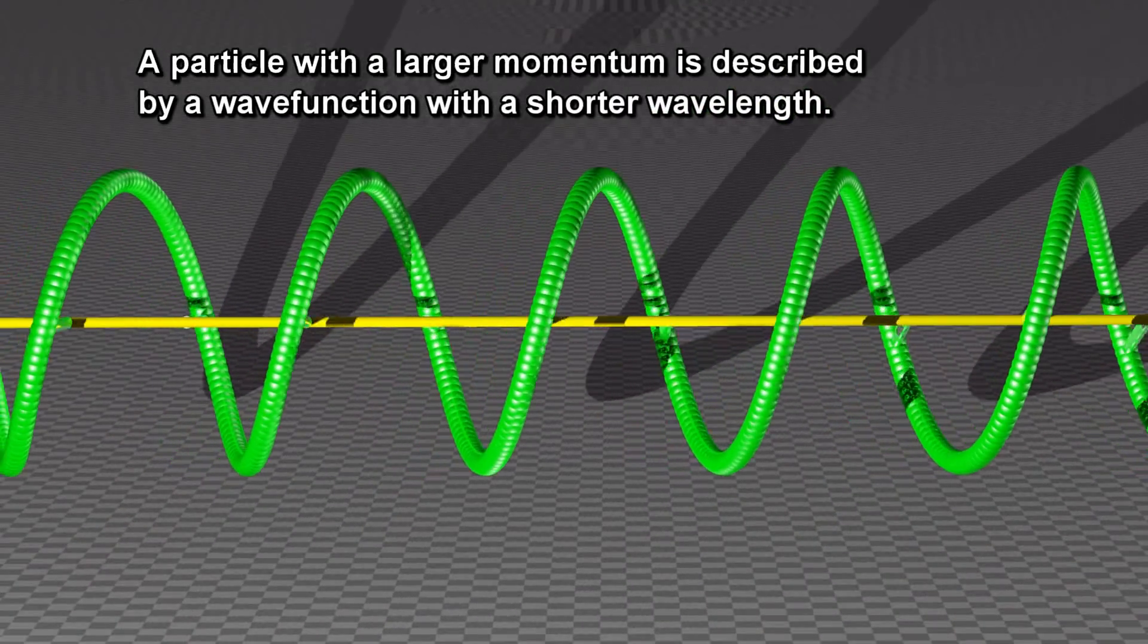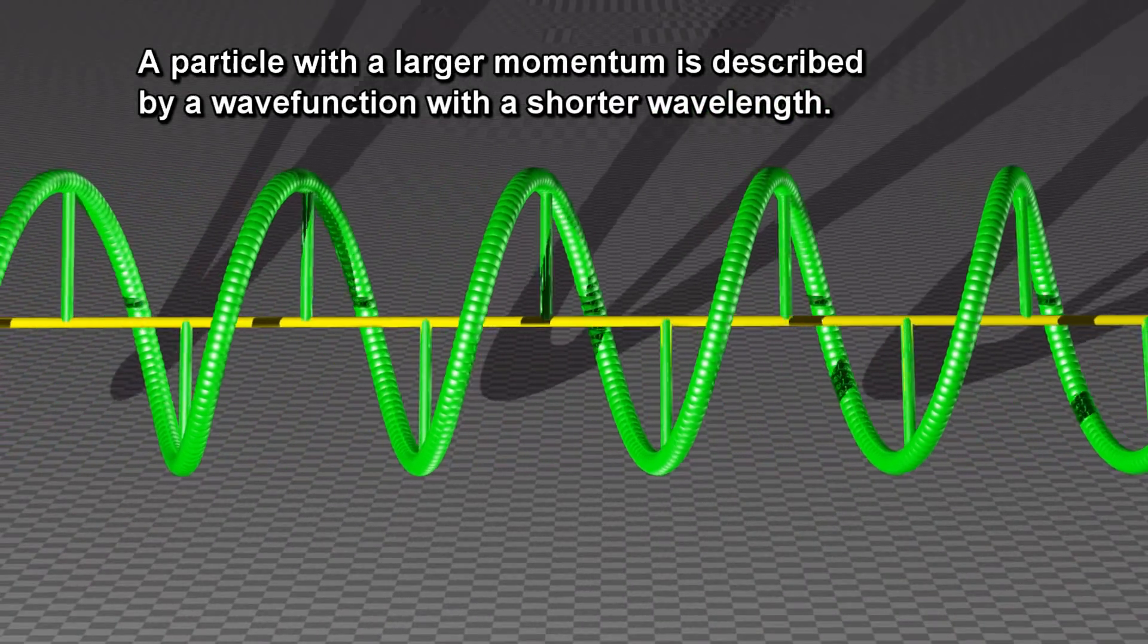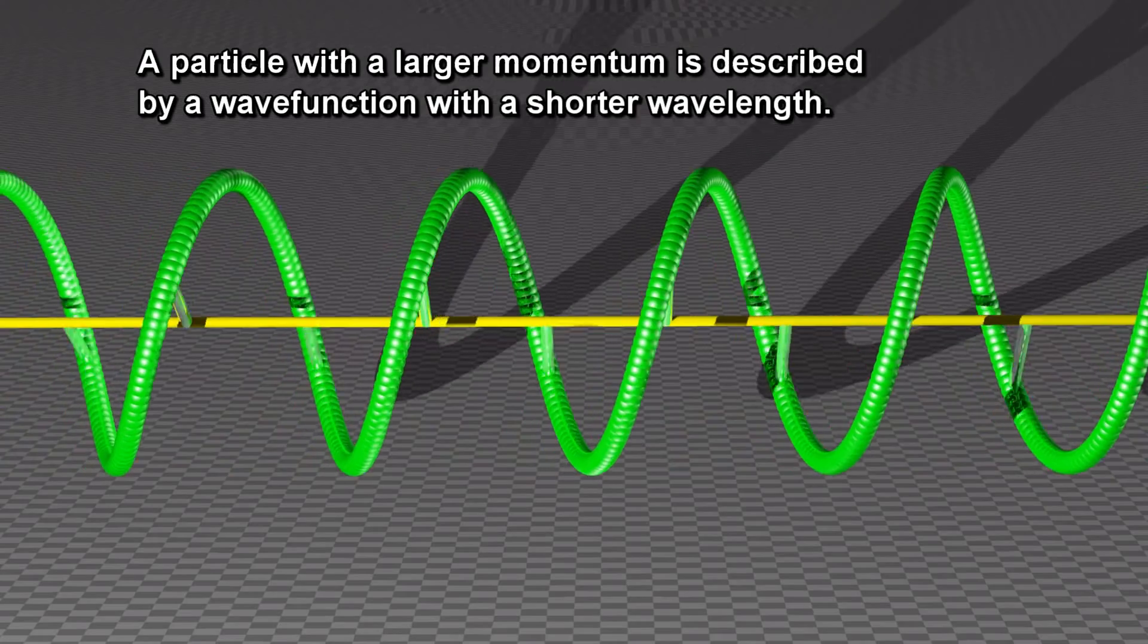A particle with a larger momentum is described by a wave function with a shorter wavelength.